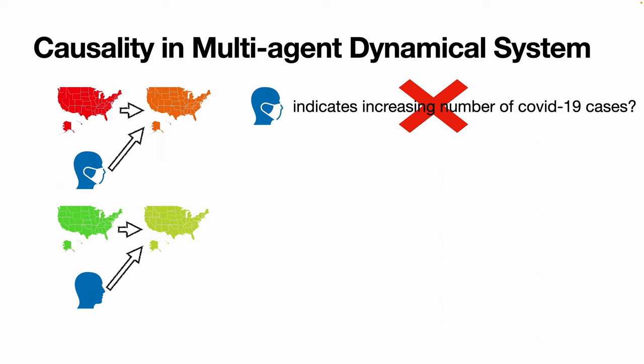This is a classic example of confusion between correlation and causality. Predicted models might associate masks with rising cases. The reality is that masks are a response to, not the cause of increased spread. Hence, it's crucial to apply causal inference to understand the true effects of policies.